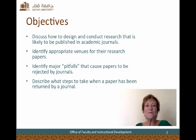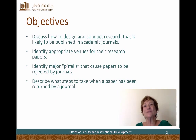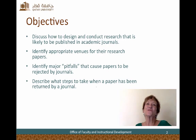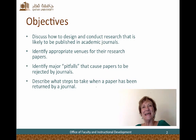We want to identify appropriate venues for the research that you're doing. We want to talk about some major pitfalls that cause papers to be rejected, so we can strengthen your chances of being accepted as an academic author. And we want to finally describe what steps should be taken if a paper is returned from a journal if it is not accepted the first time. So essentially, the overall goal of this set of lessons is to help you get published research.